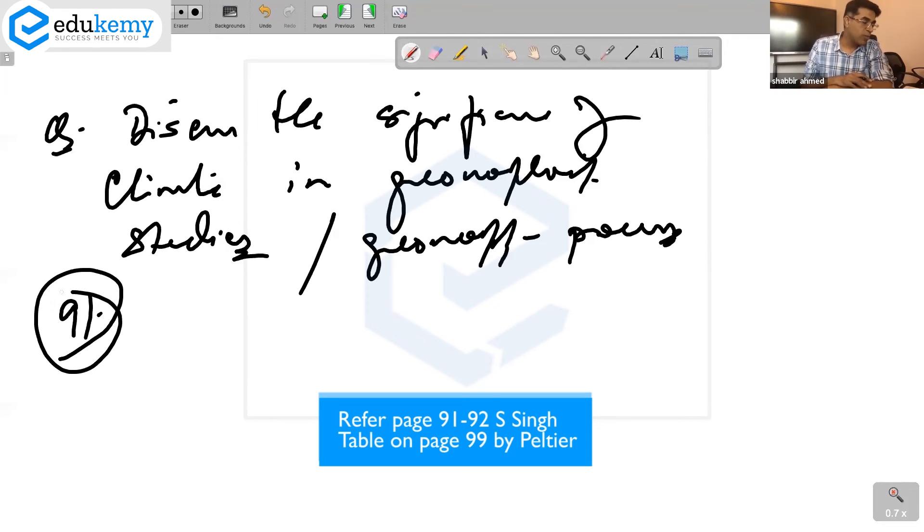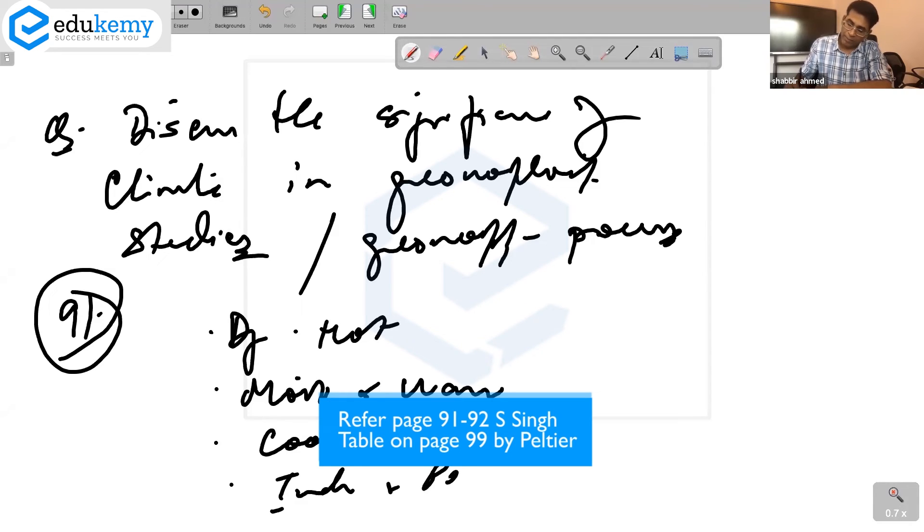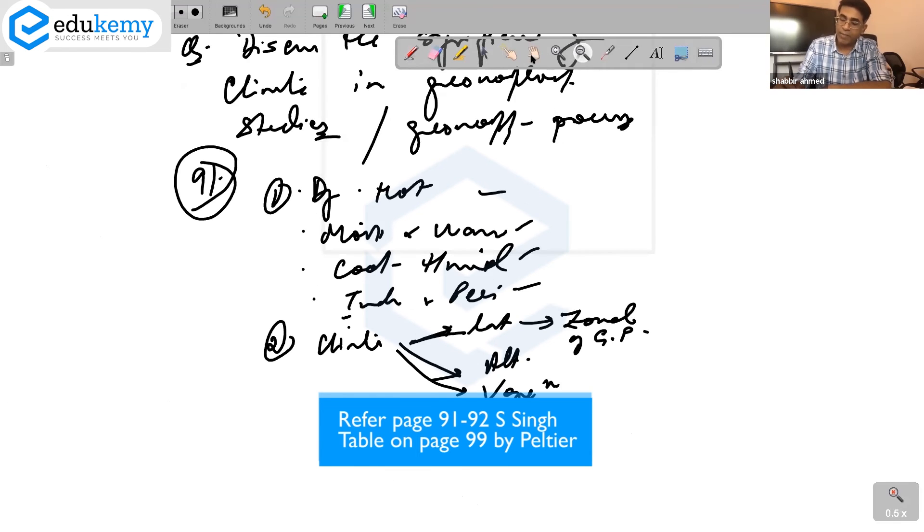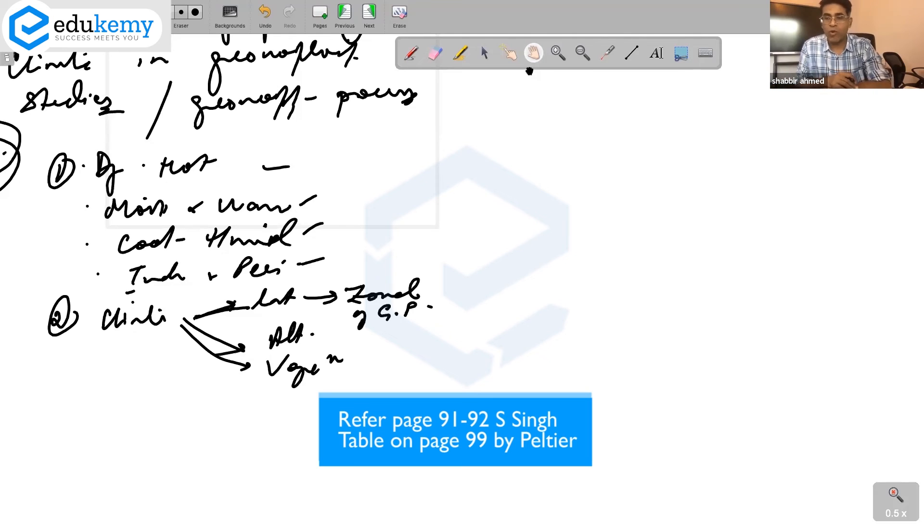Page 91 may have geomorphic process and climate. You read this up - what are the processes in the dry conditions and hot conditions, processes in moist and warm conditions, processes in cool humid conditions, processes of tundra and periglacial conditions. How does climate impact? Climate impacts in the form of latitudes, in the form of altitude variations. Climate also impacts vegetation. Climate in latitude becomes a kind of zonal pattern of geomorphic process. Do you all remember this word zonal process? Zonal process implies some kind of latitudinal patterns.